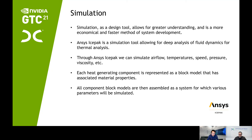Each heat generation component is represented as a block model that has associated material properties. We actually got the material properties of the CPU and GPU dice from Intel and NVIDIA. The material is called IHS — integrated heat spreader — including density, specific heat, conductivity, and radiation behavior. We also input the fan curve into IcePak, which is airflow versus pressure drop, and let the program determine the real fan operation points.